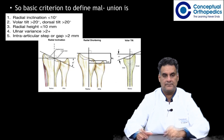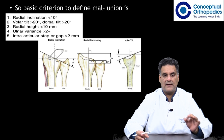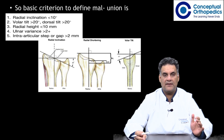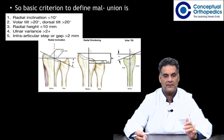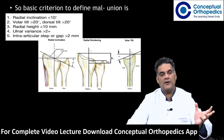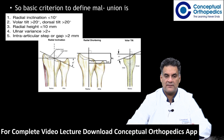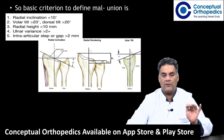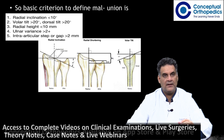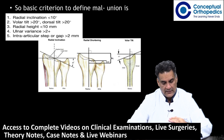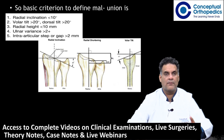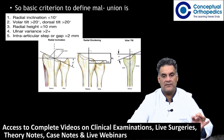Distal radius fractures heal rapidly, and a malaligned healing fracture can be considered a malunion within four to six weeks of injury. Basic criteria to define malunion include: radial inclination less than 10 degrees, volar tilt of more than 20 degrees or dorsal tilt of more than 20 degrees, radial height less than 10 millimeters, ulnar variance of plus 2 or more, and an intra-articular step or gap of more than 2 millimeters.